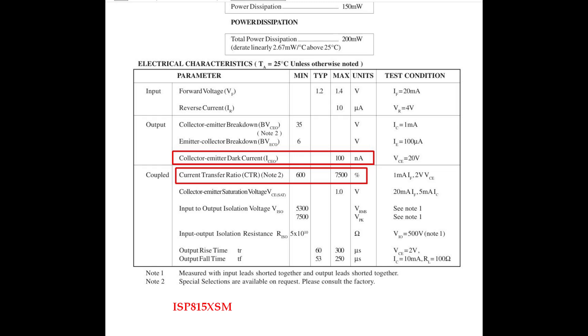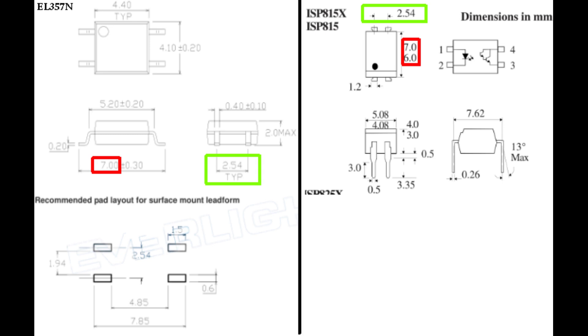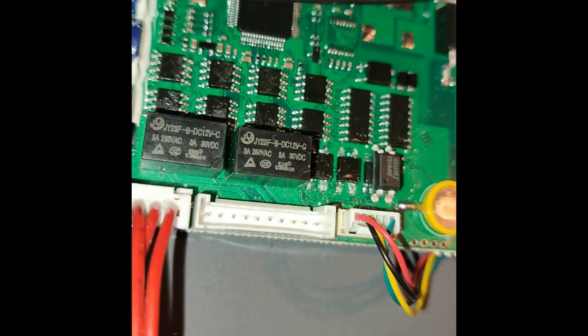Sadly, the type I ordered may not have been the most suitable one dimension-wise. I was mainly focusing on picking something with the correct width, CTR, and dark current properties and ended up going for the ISP815XSM. But I was not paying enough attention to the length, which was something with 7mm for both of them. So how much can they differ, right? Well it turns out quite a lot.